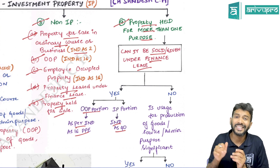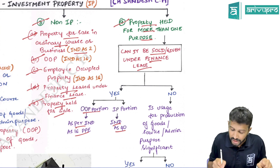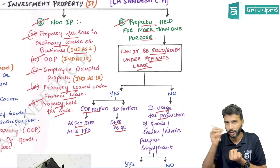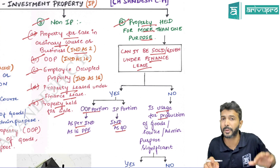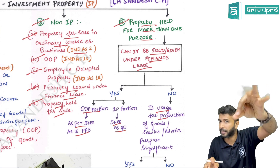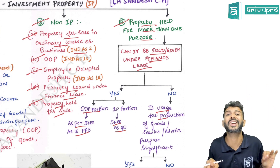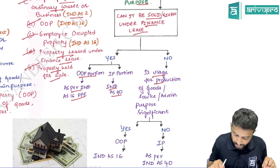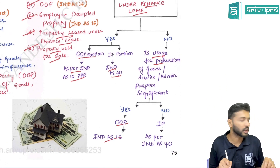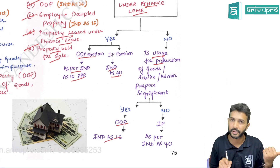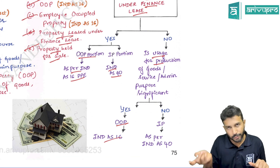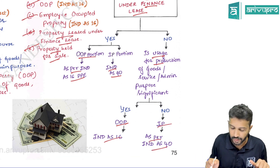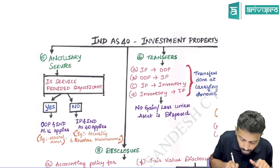If you cannot sell it separately nor give it on finance lease, then check the usage for business purpose — that is production of goods, rendering of service, or administrative purpose. Check if it is significant. If the usage for business purpose is significant, then the entire property will be classified as owner-occupied and Ind AS 16 will get triggered. If not significant, the entire property will be classified as investment property and Ind AS 40 will apply.